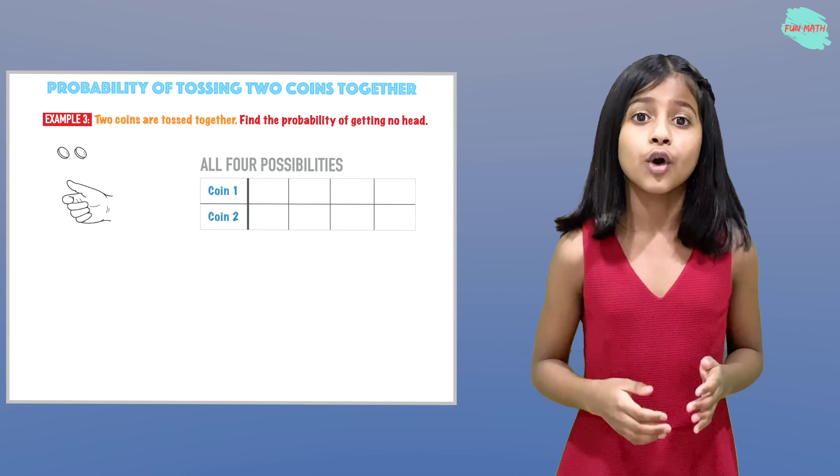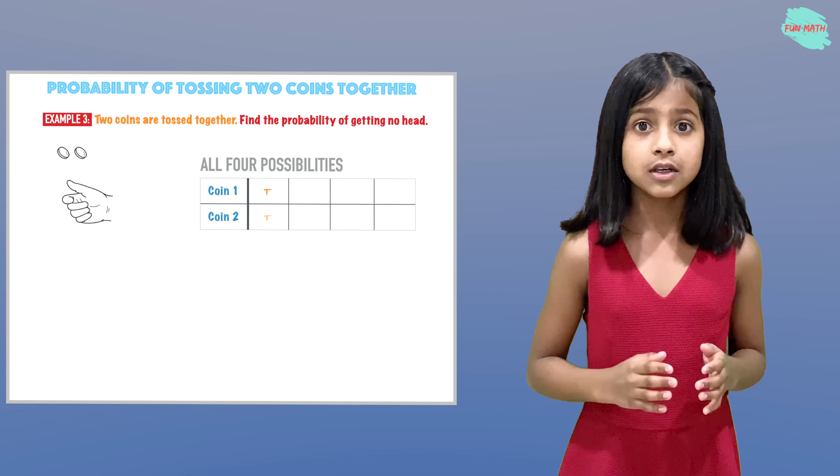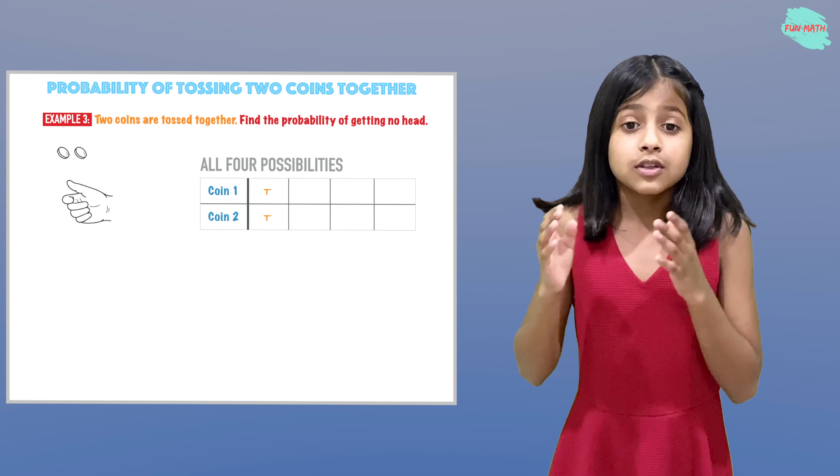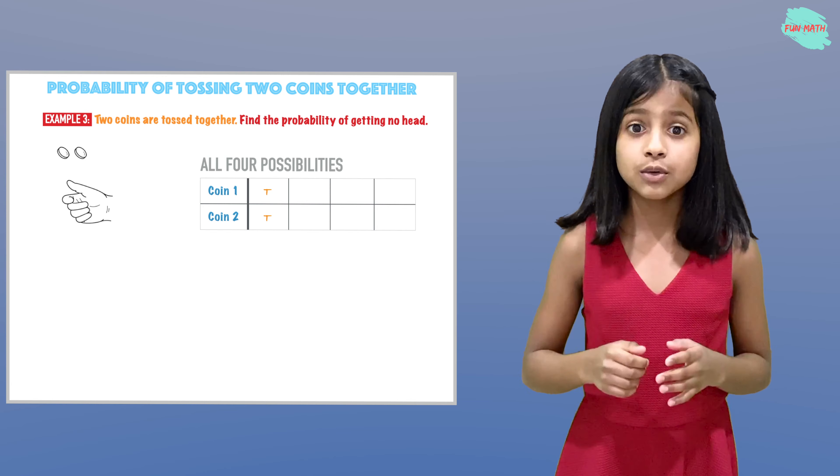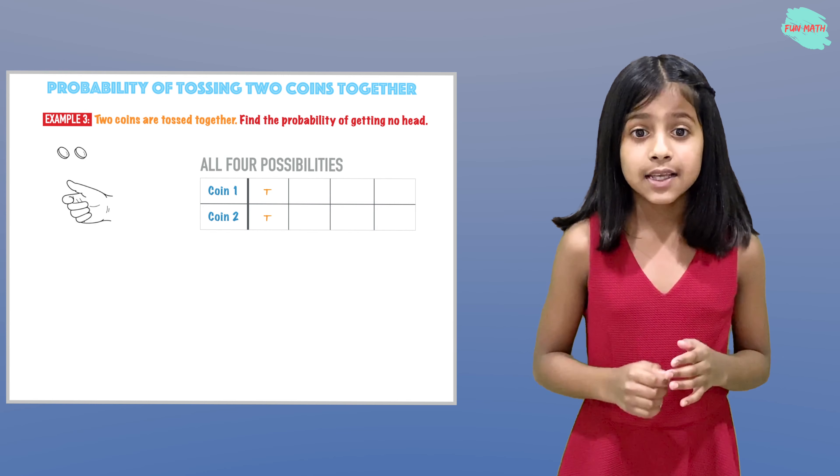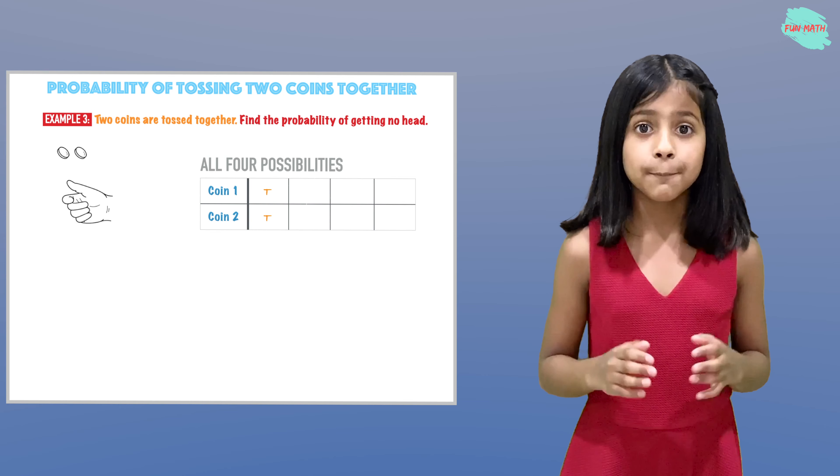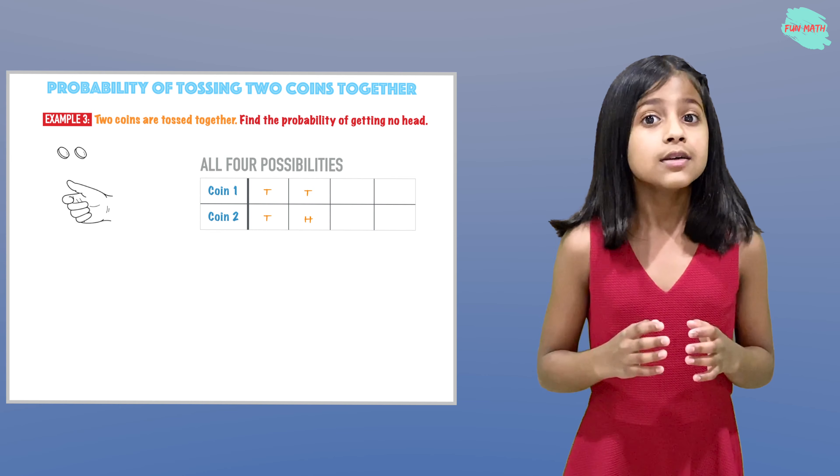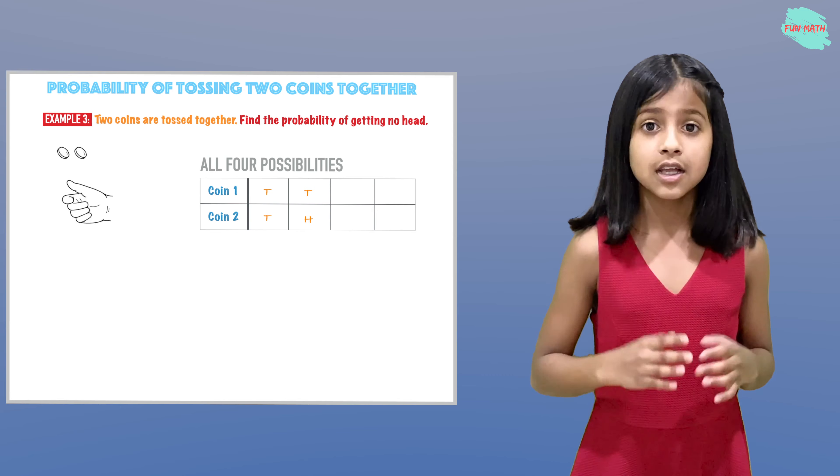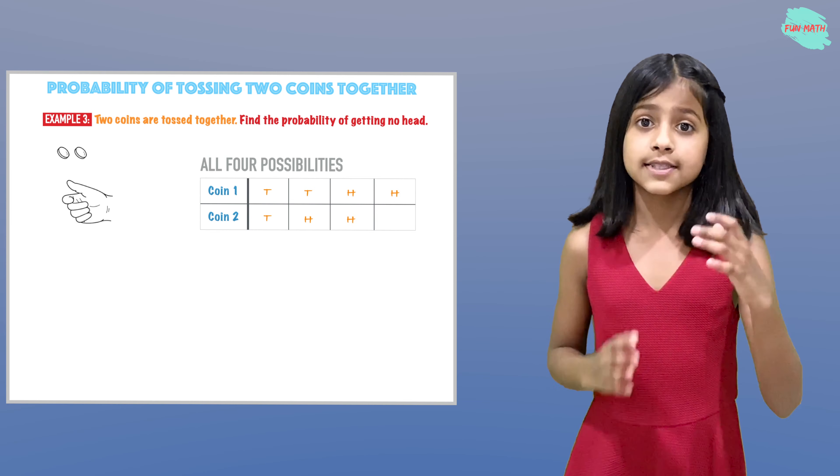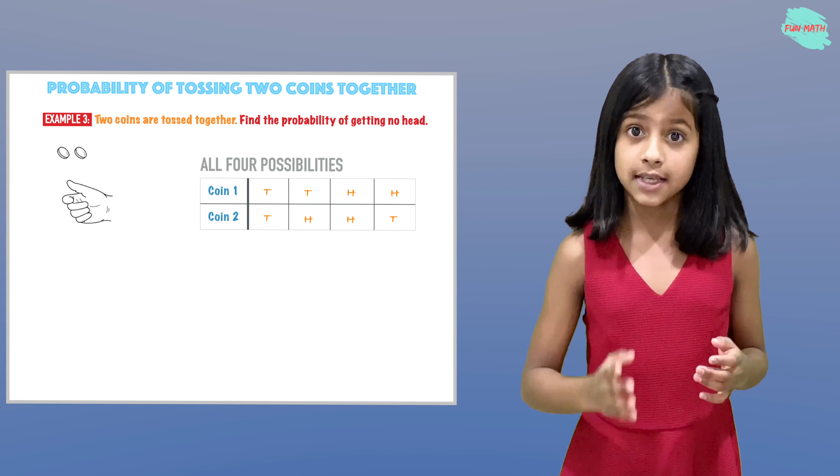We're tossing coin one and coin two. The first possibility is getting tails for coin one and tails for coin two. Second possibility: tails heads. Third: heads heads. Fourth: heads and tails.